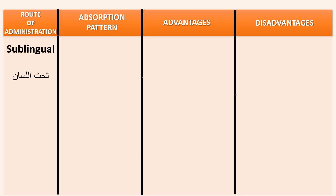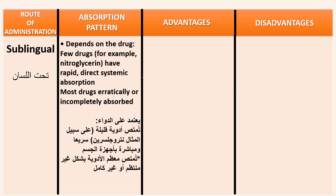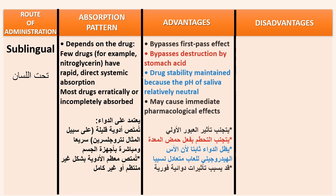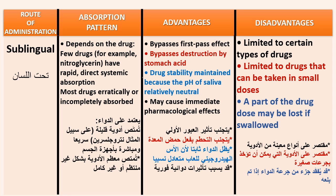Sublingual route: absorption depends on the drug — few drugs, for example nitroglycerin, have rapid direct systemic absorption, while most drugs are partially or incompletely absorbed. It bypasses the first-pass effect and destruction by stomach acid, drug stability is maintained because the pH of saliva is relatively neutral, and it may cause immediate pharmacological effects. Disadvantages: limited to certain types of drugs, limited to drugs that can be taken in small doses, and part of the drug dose may be lost if swallowed.